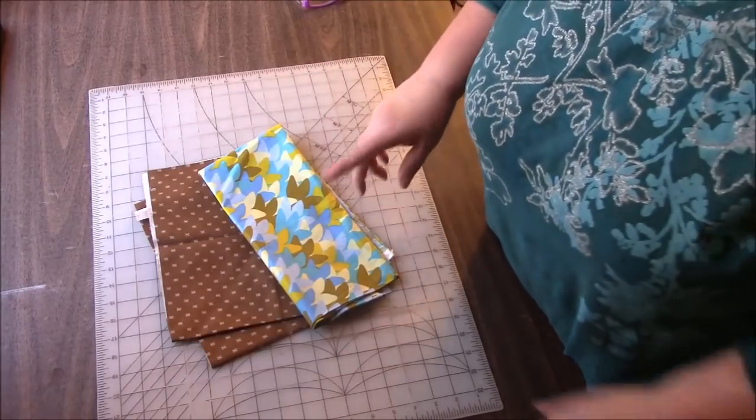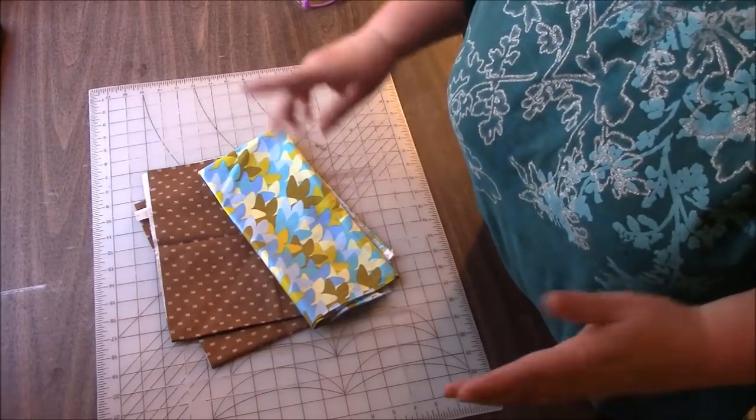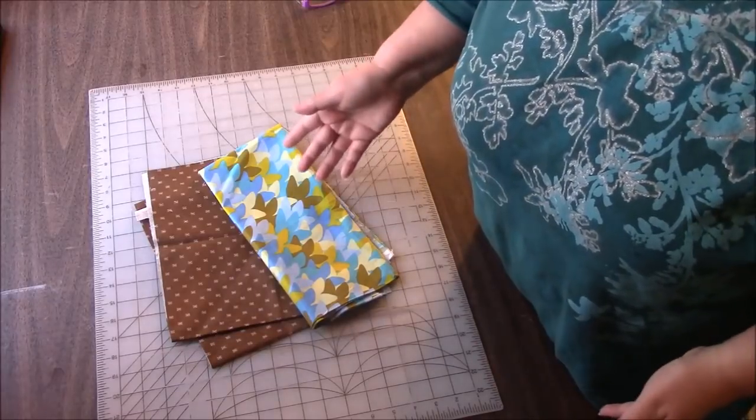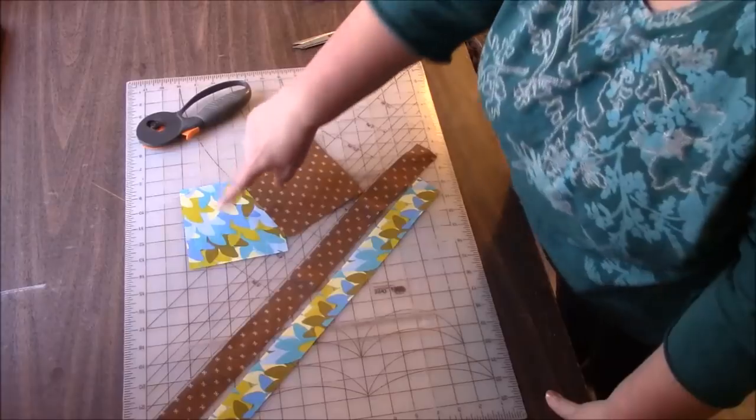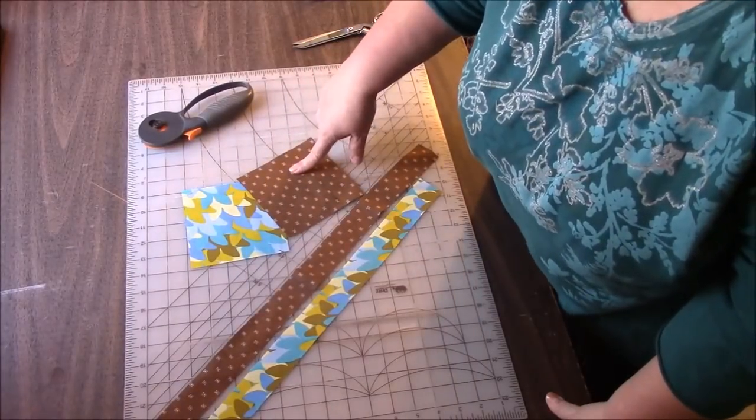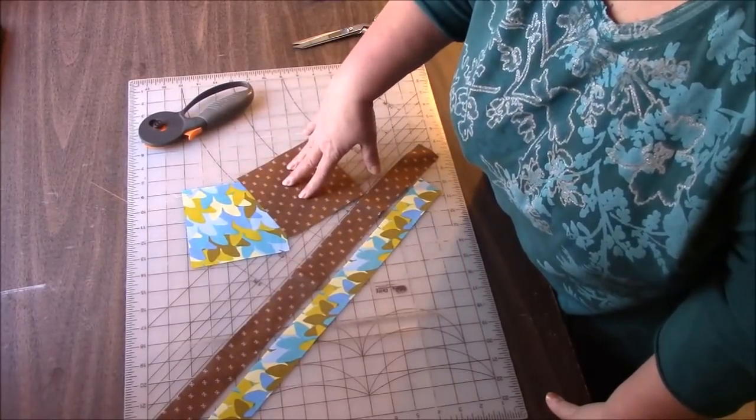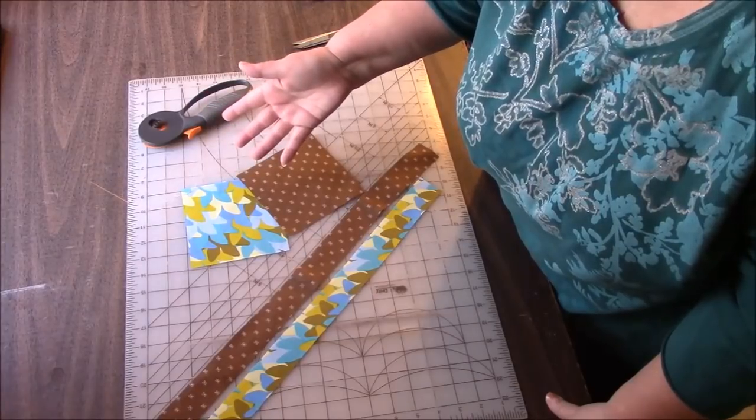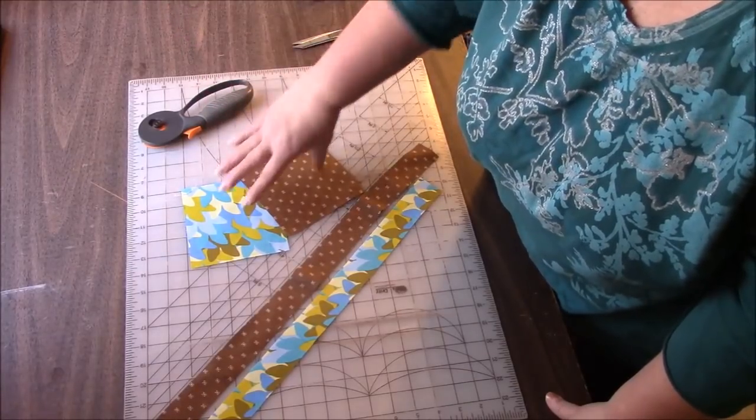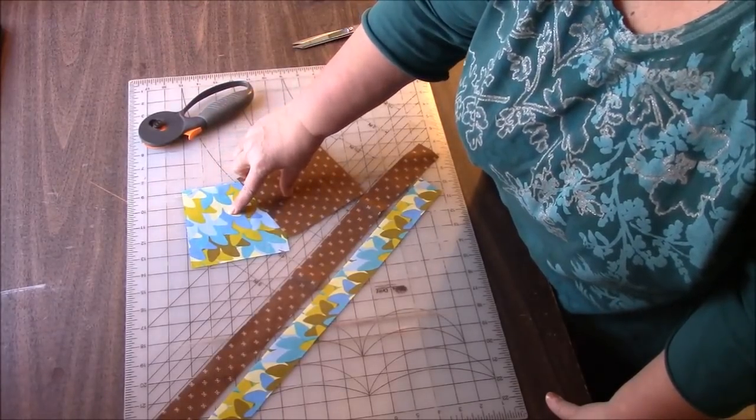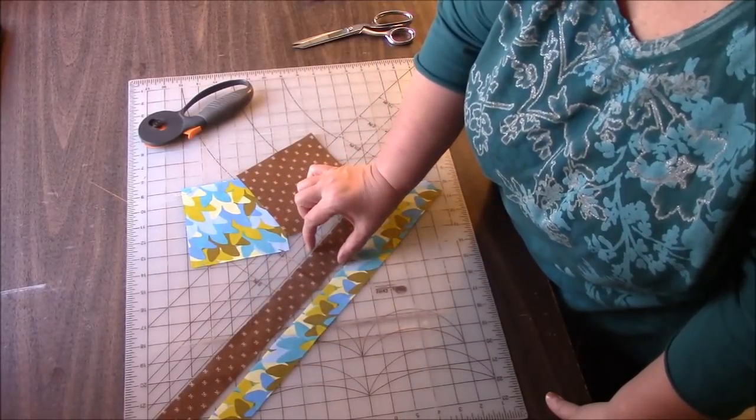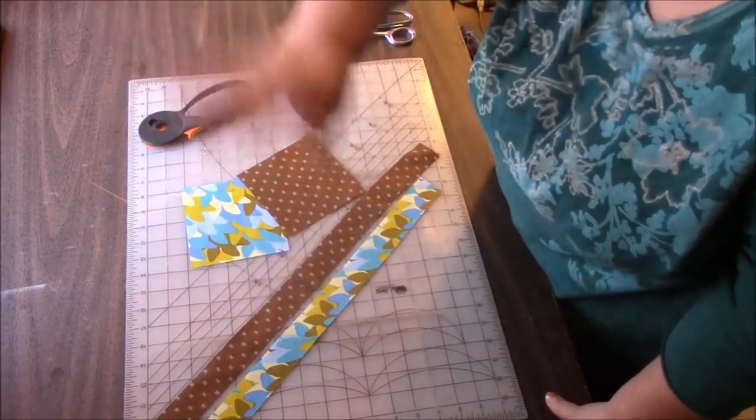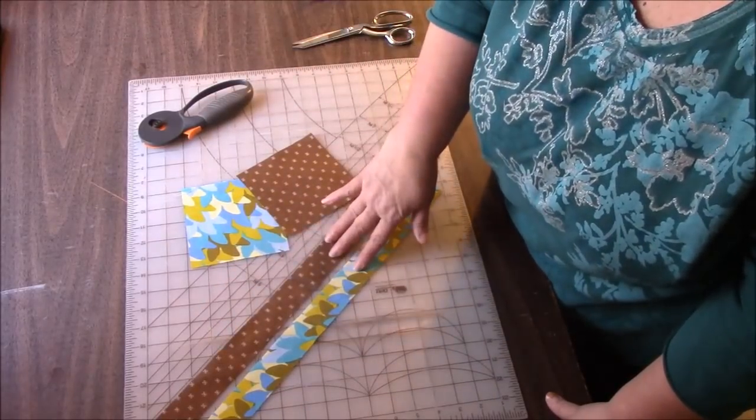We are going to be making two half square triangles, and we'll be using both of them, and we're going to make a strip set. So let me cut my stuff and I'll tell you what I did. I cut two five inch squares. I'm going with five inch squares in case you have some charm packs that you'd like to use up. We'll be using these to make the half square triangles. I also cut two strips one and a half inches wide in various lengths. I'm just going to be making a strip set.